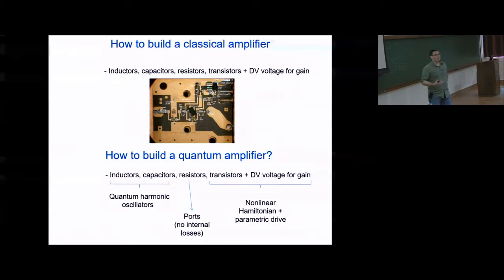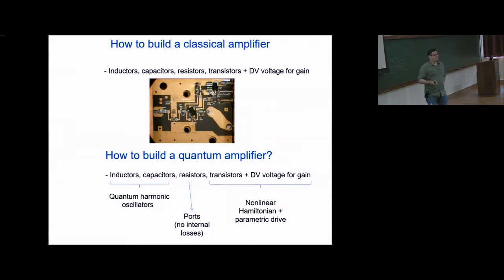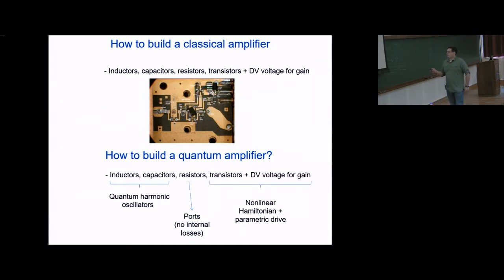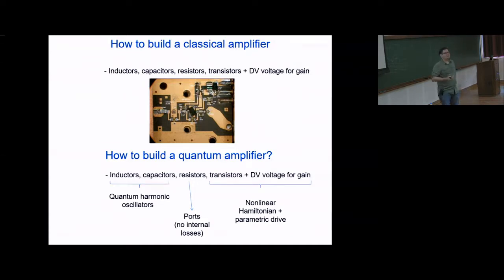To do the same thing in the quantum world, most components have direct analogs. Inductors and capacitors become quantum harmonic oscillators — there's a conversation about resonant frequency and how cold the system needs to be to be in a quantum state. We don't use resistors the same way; if we want dissipation, we couple light out through a controlled port. Internal losses are our enemy — we really don't want uncontrolled losses. For gain, instead of transistors plus DC voltage, we need a nonlinear coupling Hamiltonian plus a parametric drive.